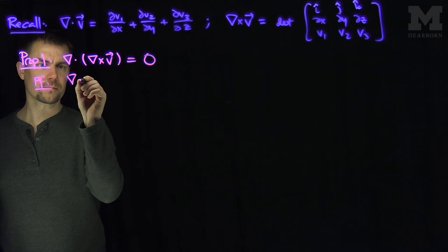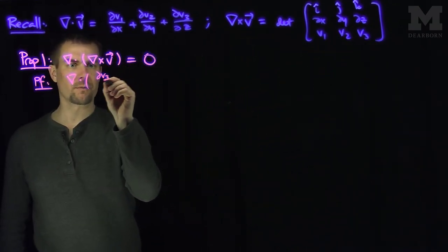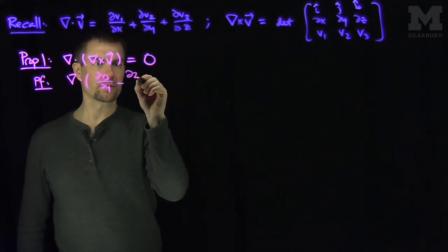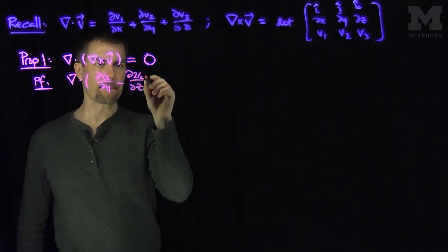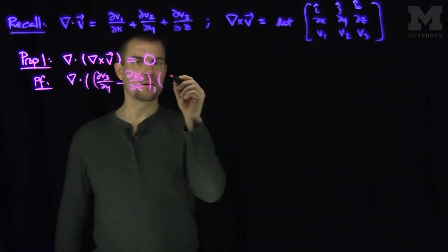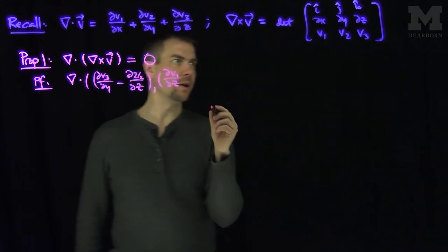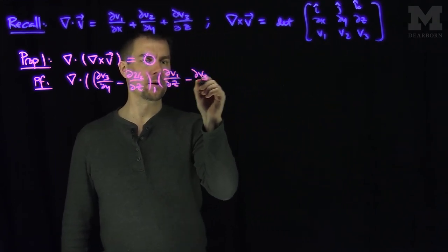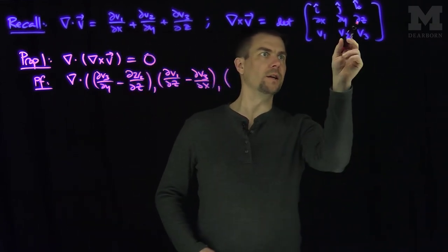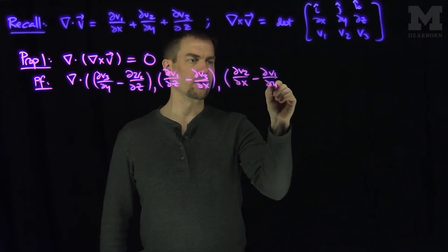The curl is going to have as its first entry: (∂v3/∂y) minus (∂v2/∂z). The second entry is: (∂v1/∂z) minus (∂v3/∂x). And the final k entry is: (∂v2/∂x) minus (∂v1/∂y).